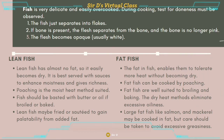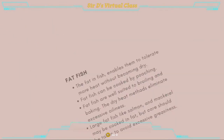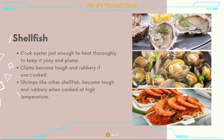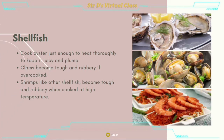Large fat fish like salmon and mackerel may be cooked in fat, but be careful — they should not be given too much additional oil as it will result in excessive greasiness. For shellfish: cook oysters just enough to heat thoroughly to keep them juicy and plump. Clams become tough and rubbery if overcooked. And shrimps, like other shellfish, become tough and rubbery when cooked at high temperature.